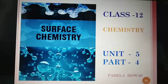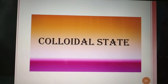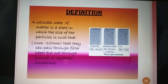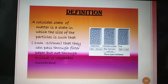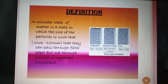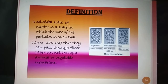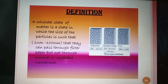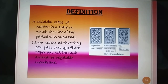Om Namah Shivaya students, today we will discuss about colloidal state. A colloidal state of matter is a state in which the size of the particles is such that they can pass through filter paper but not through animal or vegetable membrane, which is known as parchment paper. The size of the particles in the solution are between 1 nanometer to 100 nanometer.